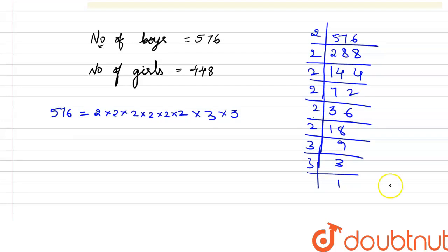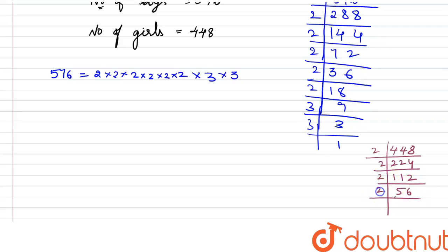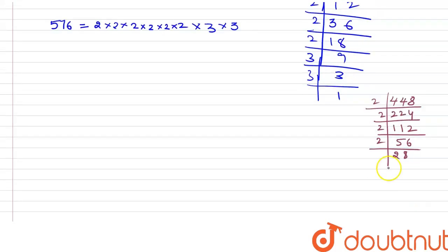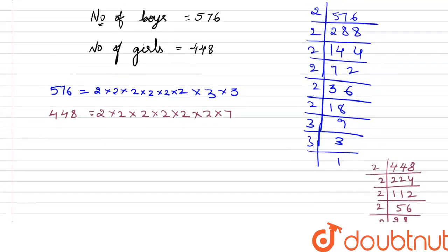For 448: dividing by 2 repeatedly — 448 ÷ 2 = 224, ÷ 2 = 112, ÷ 2 = 56, ÷ 2 = 28, ÷ 2 = 14, ÷ 2 = 7, and 7 is prime. So 448 = 2 × 2 × 2 × 2 × 2 × 2 × 7, that is six 2s multiplied by 7.